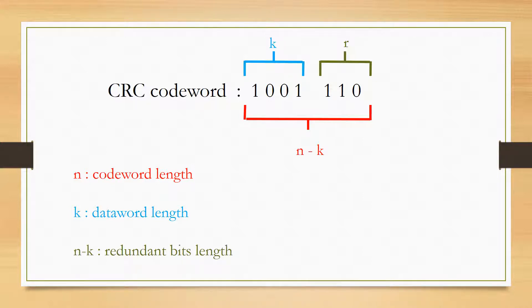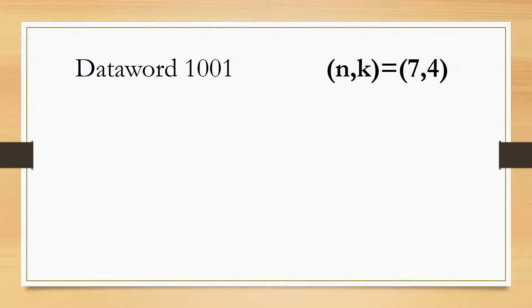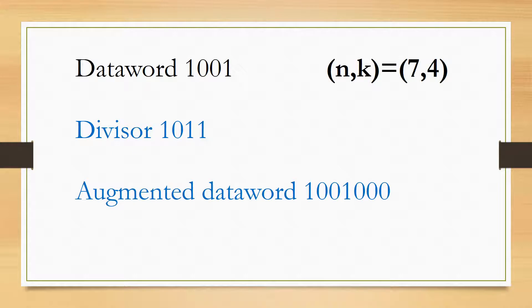Here's an example. We assume N, K as 7, 4. In this example, we assume dataword is 1001. The divisor is 1011. The augmented dataword is 1001000.